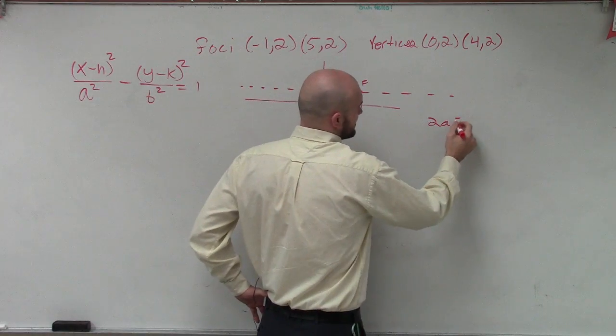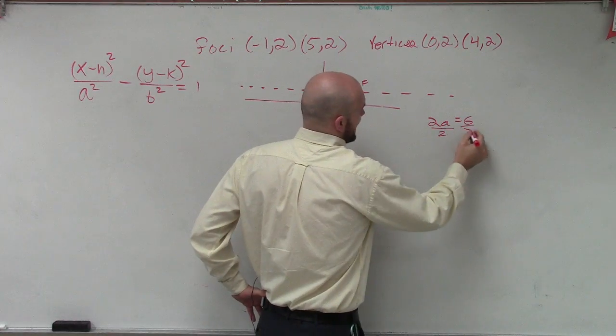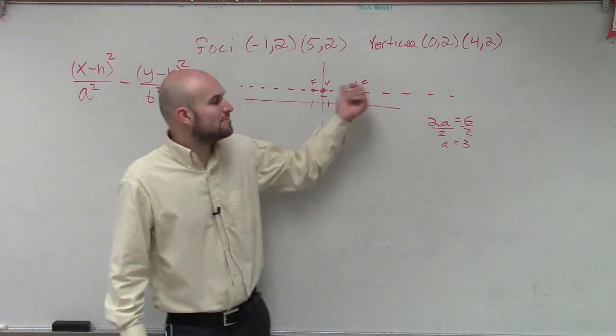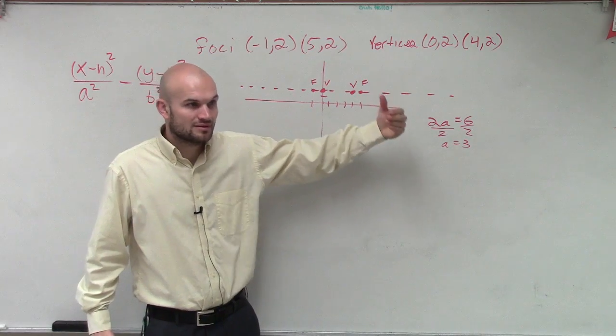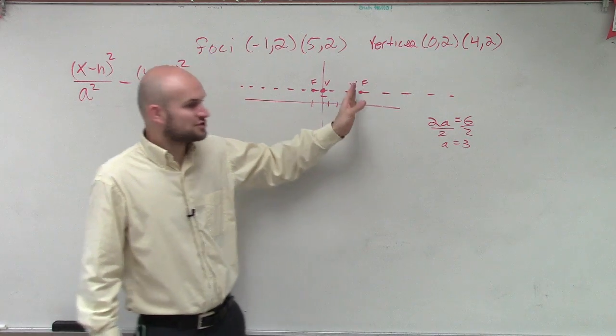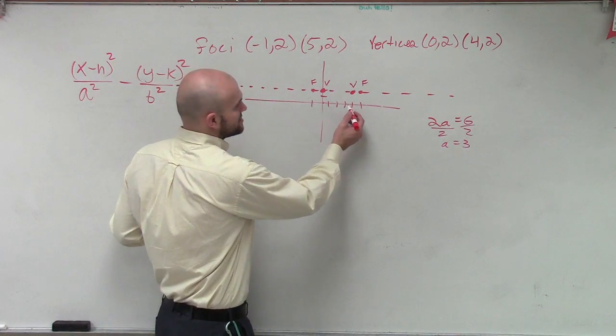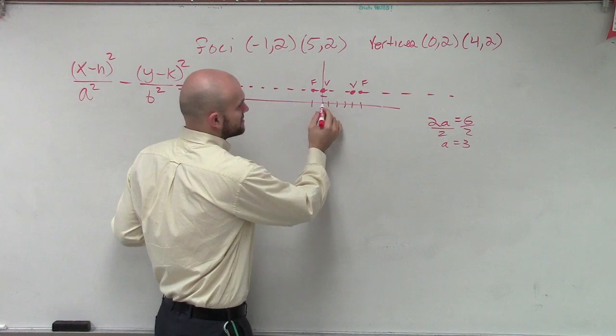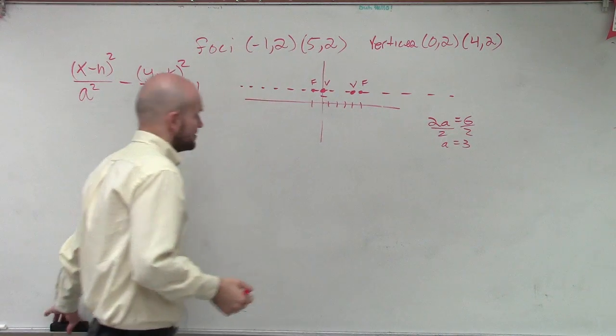Right. So, you could say 2a equals 6, right? So, therefore, my a equals 3. That means the distance from my center to my vertices is going to be 3. So, therefore, if I just travel back 3, I can figure out where my center is going to be, which is? 2. Where's my two vertices? 1, 2, oh, I was doing 5. 5 minus 3.